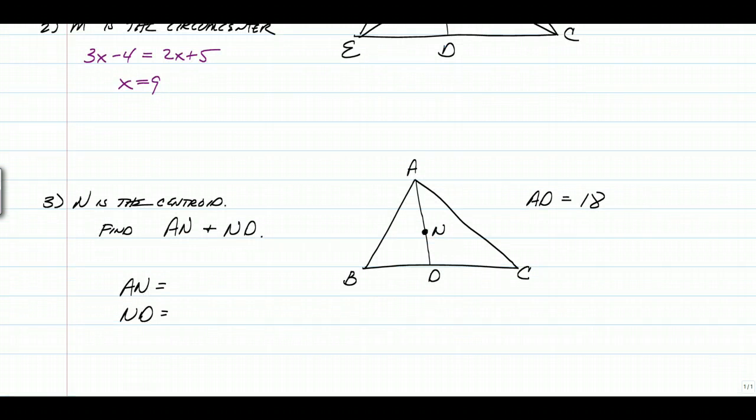N is a centroid. So in this diagram, we have a centroid, and we are given that the length of AD, the entire median, is 18. I want to know the lengths of AN and ND.